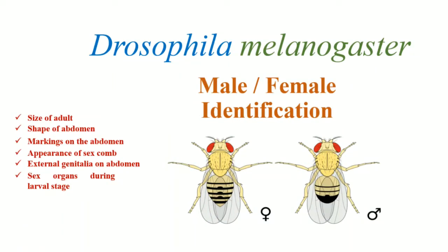In this video, we are going to talk about the sex determination in Drosophila melanogaster. Size of adult, shape of abdomen, markings on the abdomen, appearance of the sex comb, external genitalia on abdomen, and the sex organs during larval stages are the morphological characteristics that are considered while sex determination in Drosophila melanogaster.